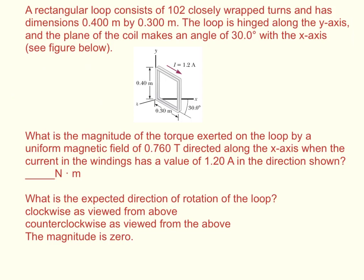A rectangular loop consists of 102 closely wrapped turns and has dimensions of 0.4 meters by 0.3 meters. The loop is hinged along the y-axis, and the plane of the coil makes an angle of 30 degrees with the x-axis.